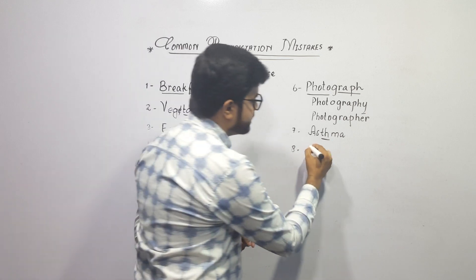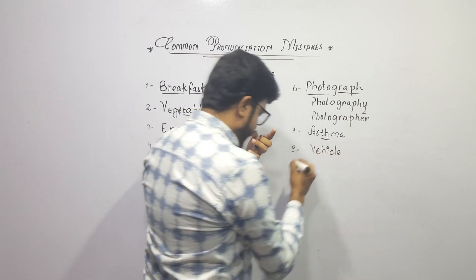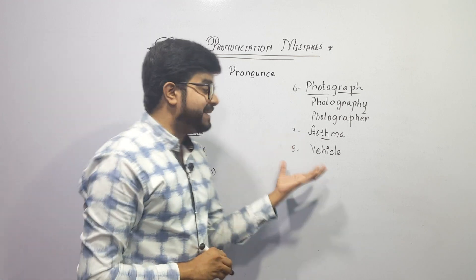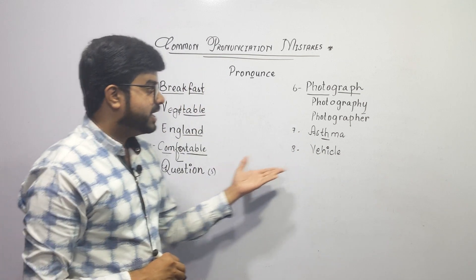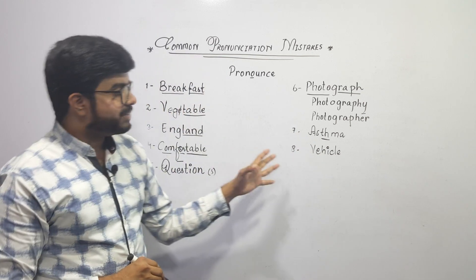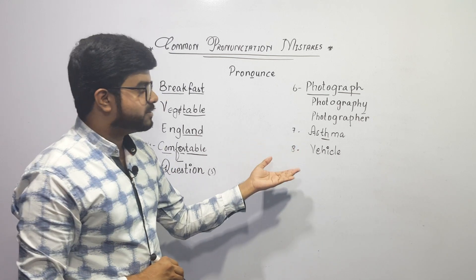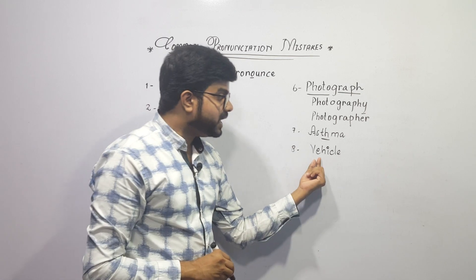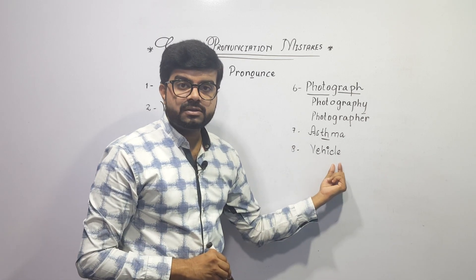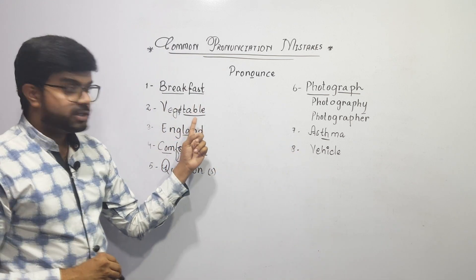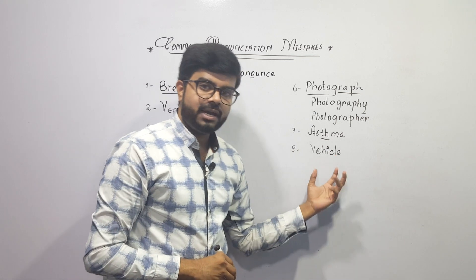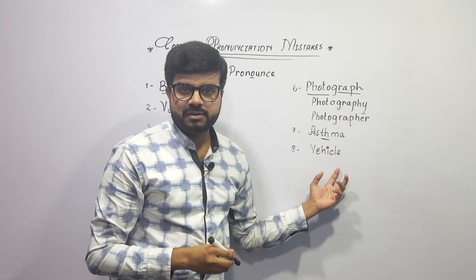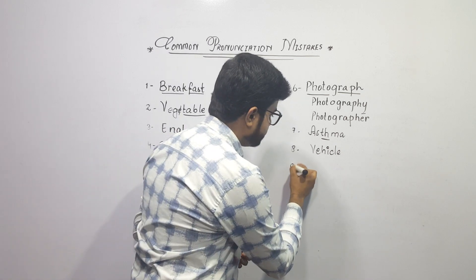The next word is mispronounced by almost everyone, and it's not really your mistake — the spelling structure in English is quite confusing. The word looks like it could be 'vee-hi-cle', and some people do pronounce it that way. But the correct pronunciation is vehicle, not 'vehicle'. Just as we said 'tbl' earlier rather than 'table', we say vehicle — vehicle.